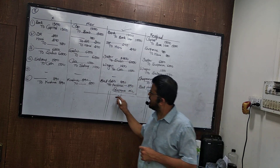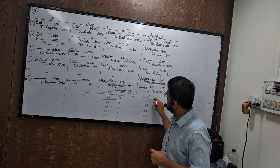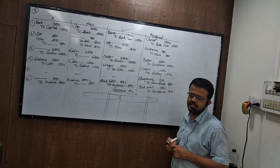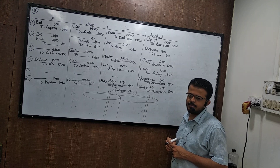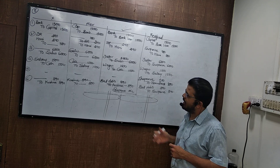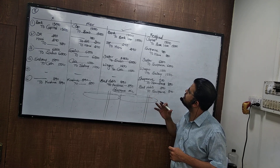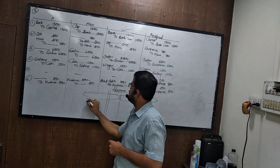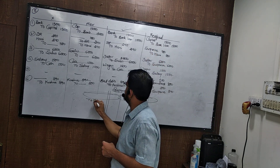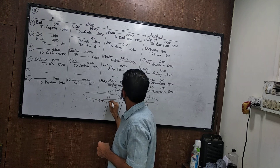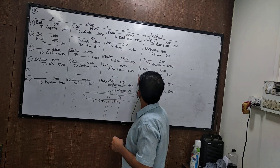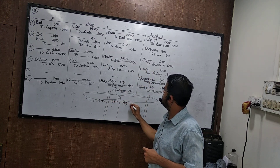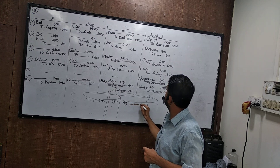Goods purchased from Rajesh were 7700 but were not posted to his account from the purchase book. The correct entry is purchase to Rajesh. The error is in Rajesh's account — posting was not done. Wrong entry: purchase to dash. Reverse: dash to purchase. Rectified: suspense to Rajesh, 7700.